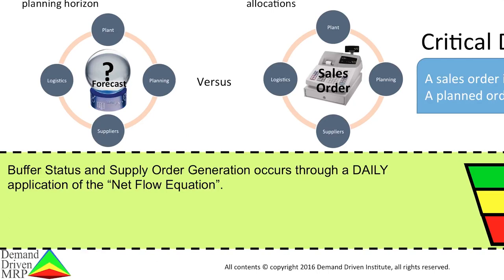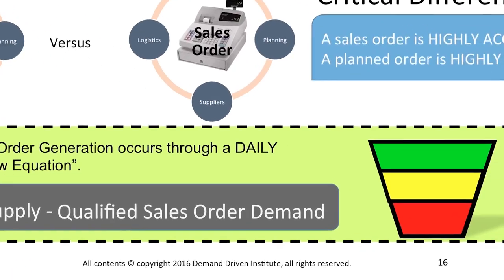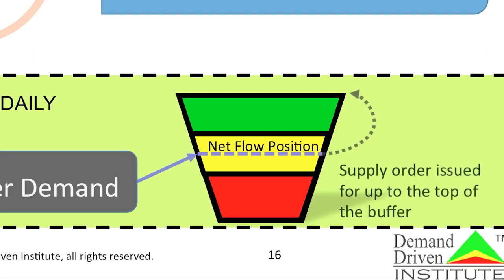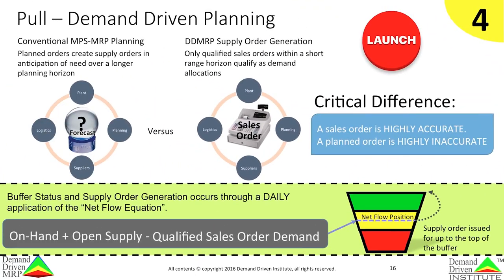This unique supply order generation equation is called the net flow equation. The quantity on hand is added to the quantity of open supply, then quantity of qualified demand is subtracted. This produces the day's net flow position. If the day's net flow position is below the top of the yellow zone, an order is issued for the amount to reach the top of the green zone. Once again, DDMRP is designed to never net to zero.